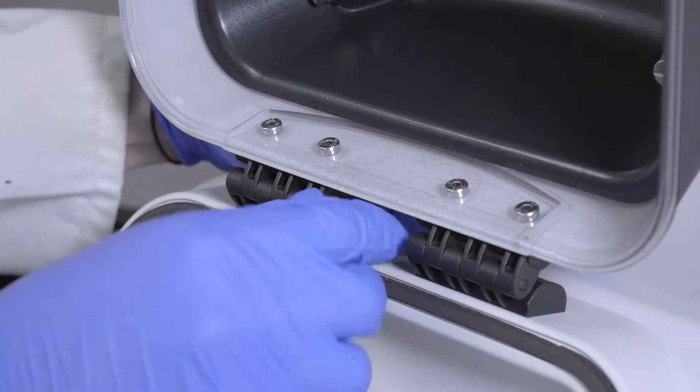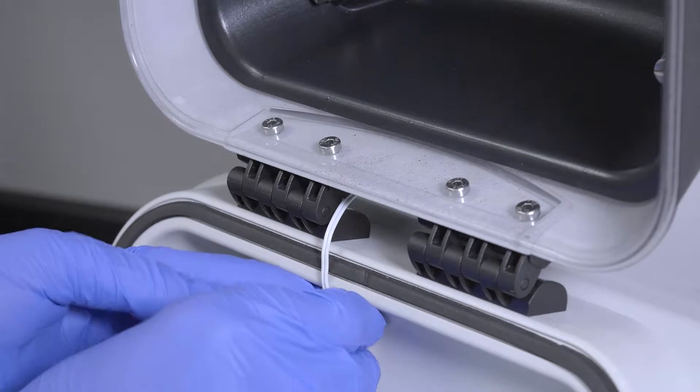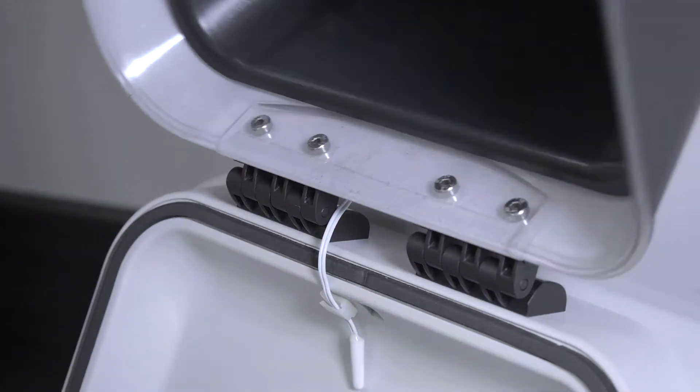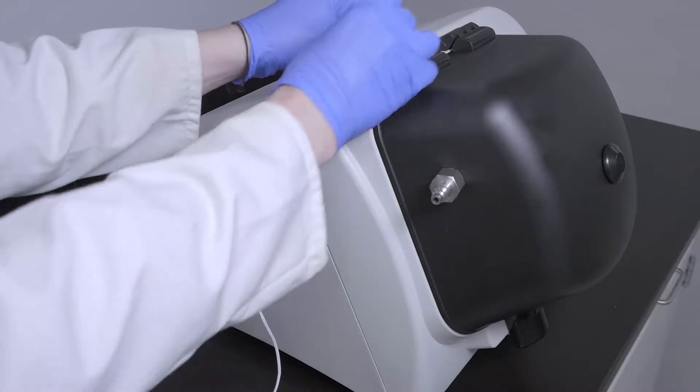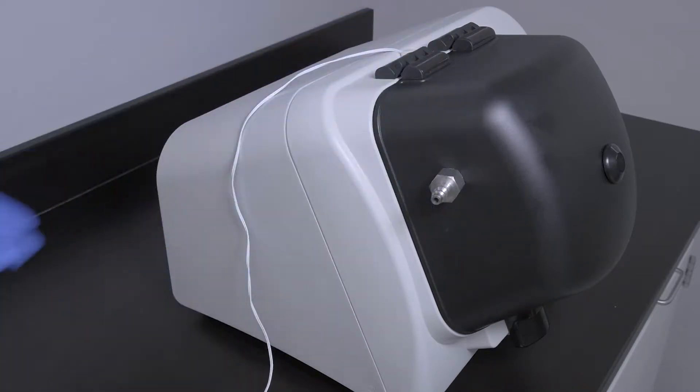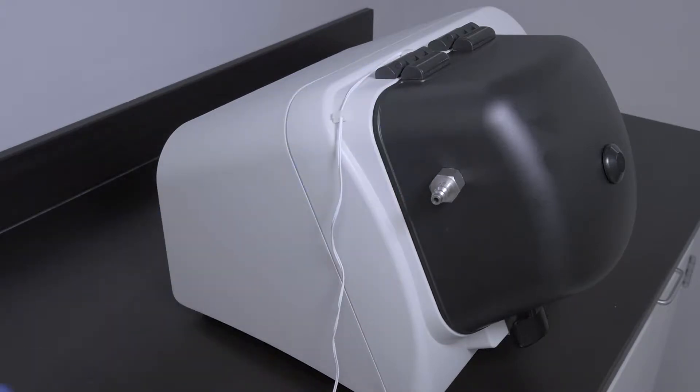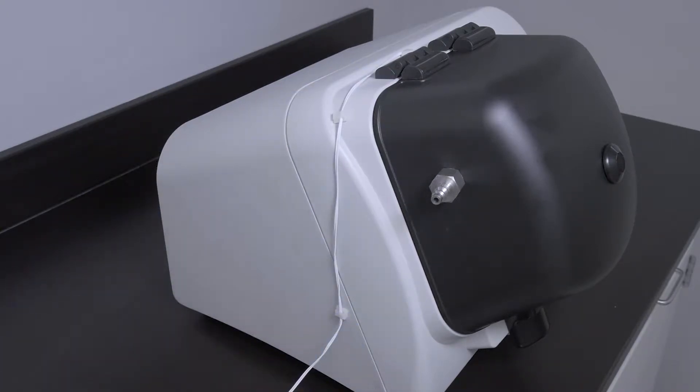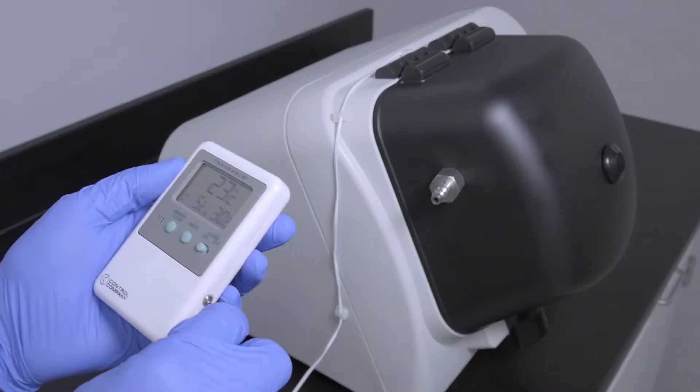Position the thermometer probe under the BeadRuptor lid and use a couple clip to secure the thermometer probe wire. Place the remaining couple clips along the top and side of the BeadRuptor, guiding the wire through the clips. Plug the wire into the external thermometer.